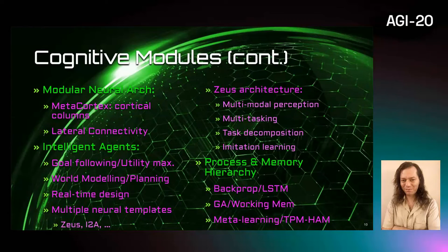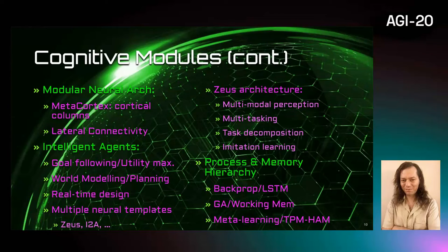We designed a modular neural architecture to support complex neural tasks. Metacortex models cortical columns as an ensemble system with lateral connectivity to increase network modularity and exploits affinity. Intelligent agents will have goal-following and utility-maximizing behavior. They will be built on a dual-world modeling planning architecture and will have real-time operation. Multiple neural templates such as Zeus and i2a will be provided.